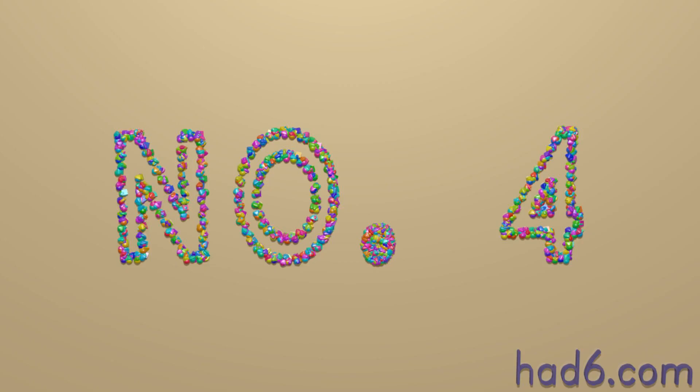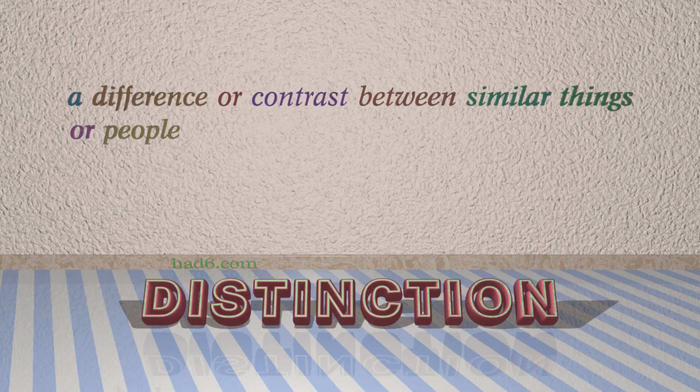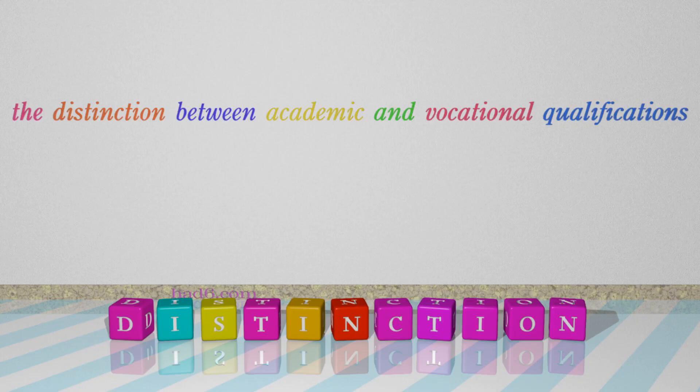Number 4: Distinction. Which means a difference or contrast between similar things or people. For example: The distinction between academic and vocational qualifications.